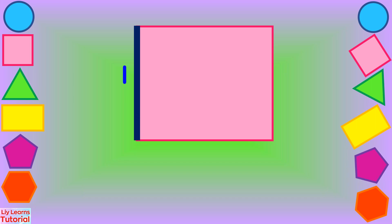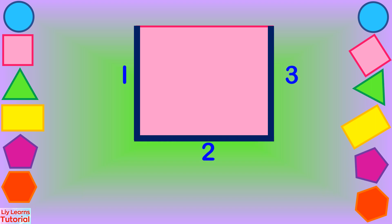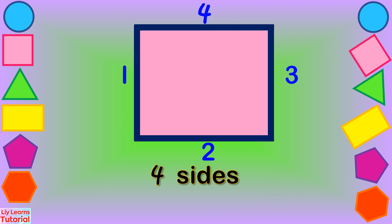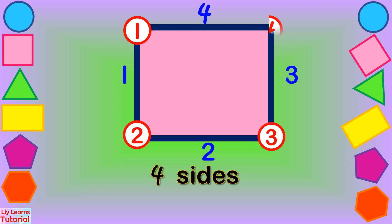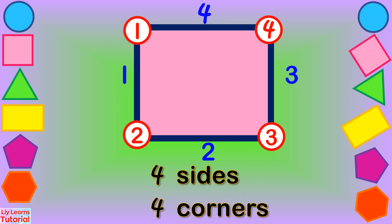Let's count the sides: one, two, three, four — four sides. Let's count the corners: one, two, three, four — four corners.